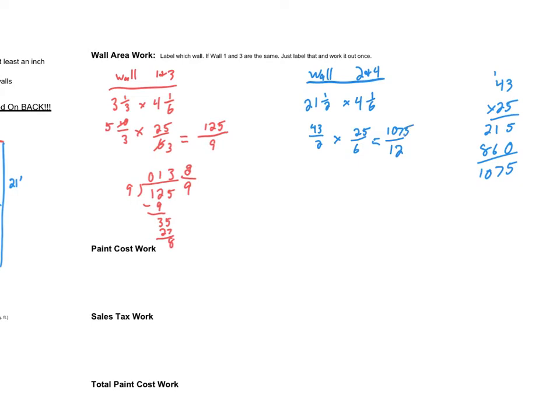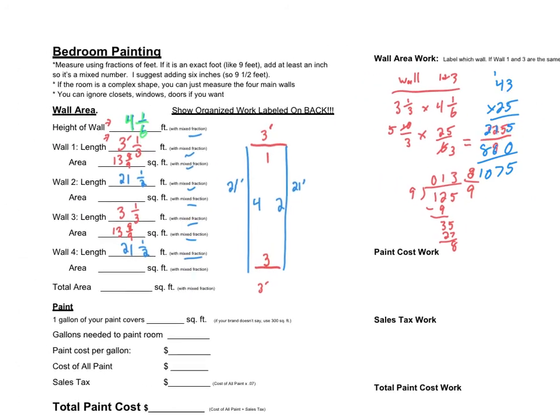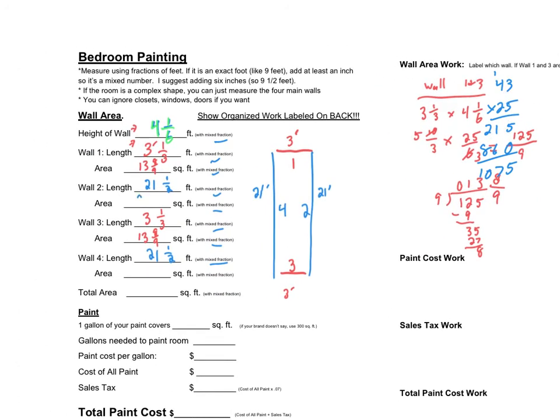1,075 twelfths. Okay. So now, again, I need to change that back from an improper back to a mixed number. By dividing. 12 goes into 107. Well, let's see. 8 dozen is 96. I bet that's as close as I can get. Yep. Remainder 11. So it's 89 and a remainder of 7 twelfths. 89 and 7/12. Okay. Again, I can use a calculator to check this. It is important that I have right answers. I can estimate to make sure. 4 and a 6 times 21. Well, 4 times 21 is 84. So I know my answer is going to be a little bit bigger than 84.